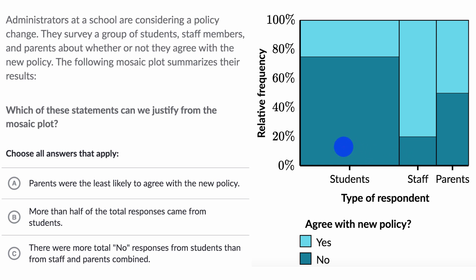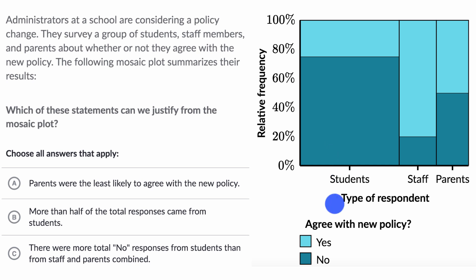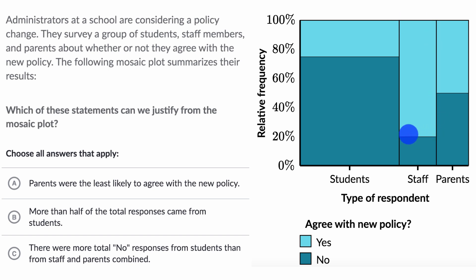This mosaic plot, what it does above and beyond a segmented bar chart is it gives us the width that shows us how many students versus staff versus parents were surveyed. It looks like more than half of the people surveyed were students, and then staff and parents seem similar. In terms of who is agreeing with the policy — that light blue color — it seems like students are not very likely to agree with the policy. Staff is very likely to agree, with the bulk of staff agreeing, and parents are kind of on both sides.